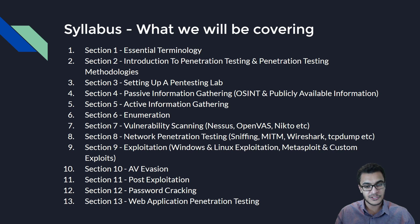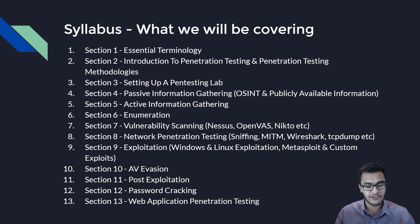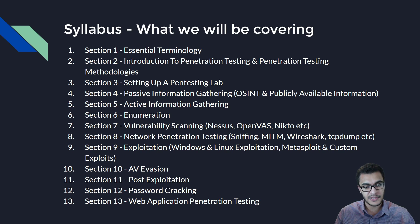In Section 8, we'll talk about network penetration testing. We'll be specifically talking about sniffing, man-in-the-middle attacks, Wireshark, using TCP dump, ARP spoofing, and generally network-based attacks that involve performing things like DHCP poisoning and stuff like that.